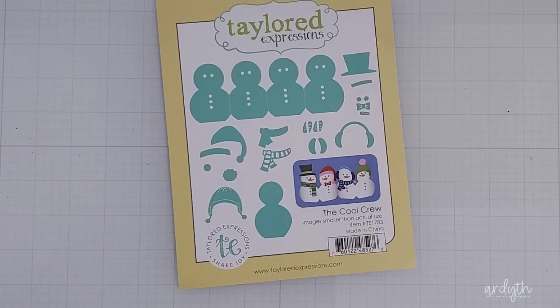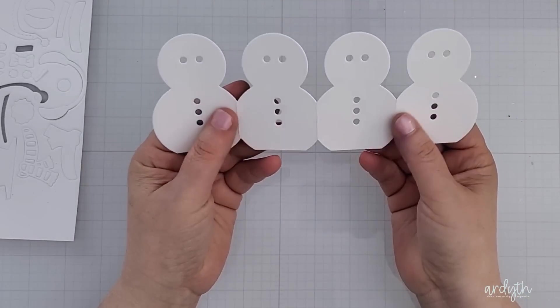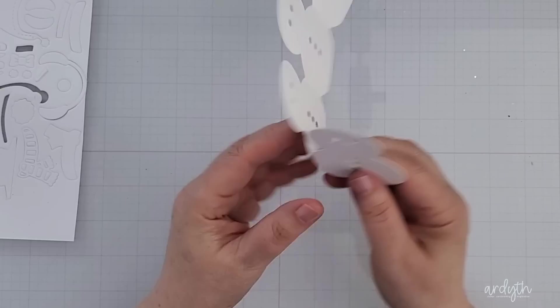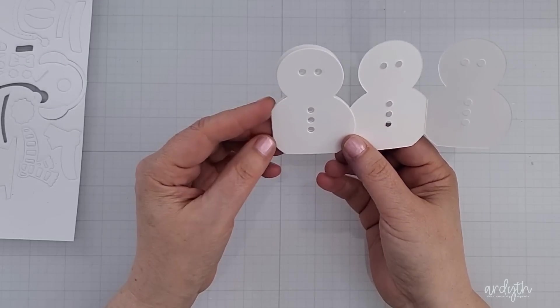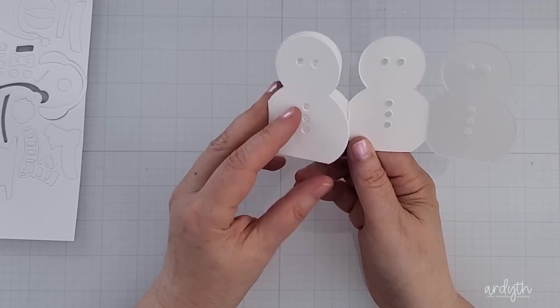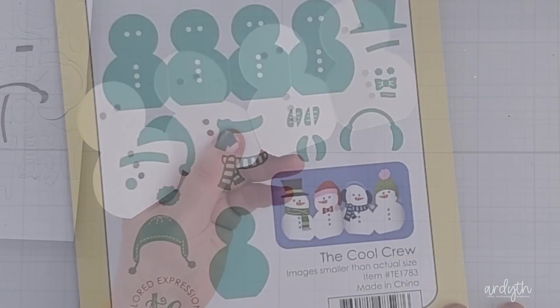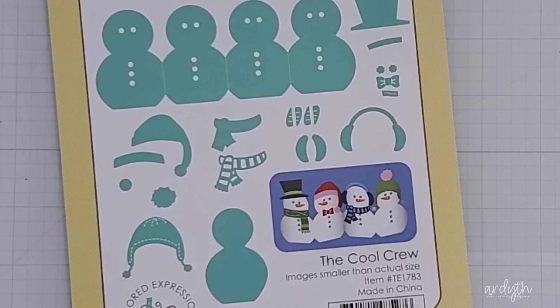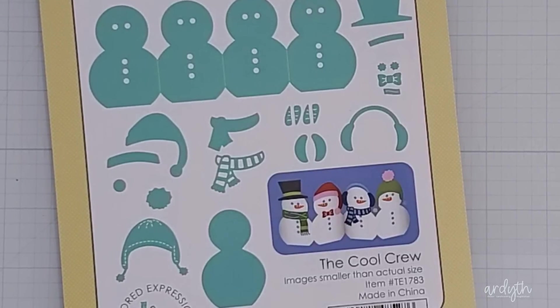This is the Cool Crew die set from Tailored Expressions. It cuts a row of four snowmen plus loads of accessories so you can customize it however you want. The little four snowman row folds back and forth so it can stand up as a little card or like a place card or a decor item on your mantle.